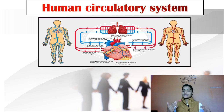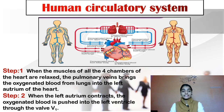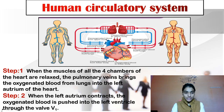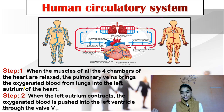We have already discussed the respiratory system, its important organs, and their functions. Our heart has four chambers: two upper chambers — the right atrium and left atrium — and two lower chambers — the right ventricle and left ventricle.